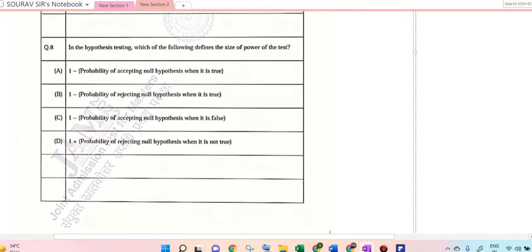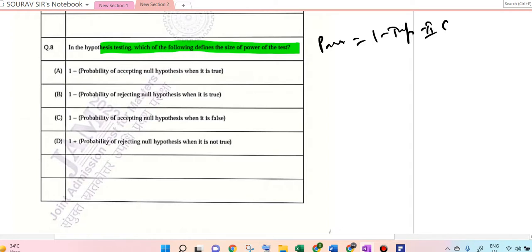Next is question number 8. In hypothesis testing, which of the following defines the size and the power of the test? The power of the test is decided by 1 minus Type 2 error. What is this Type 2 error? Remember that accept reject.